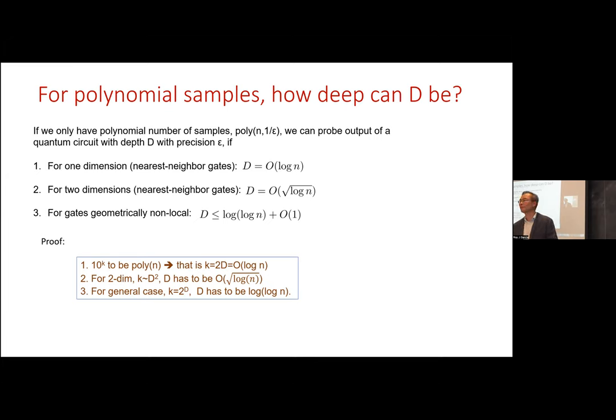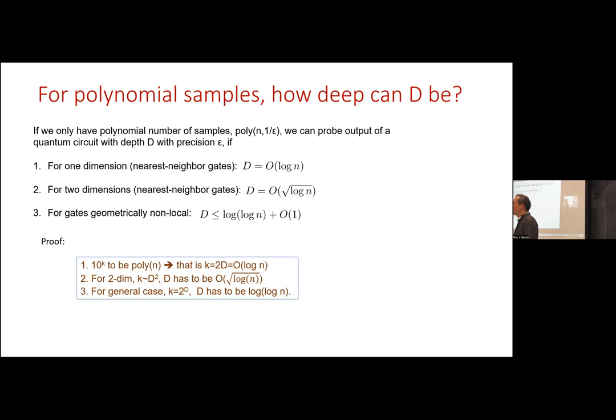Question from audience: for the cat state (GHZ state), what depth do you need? In 1D, you need linear depth. In 2D, you can do it shallower — I'll show an example toward the end.